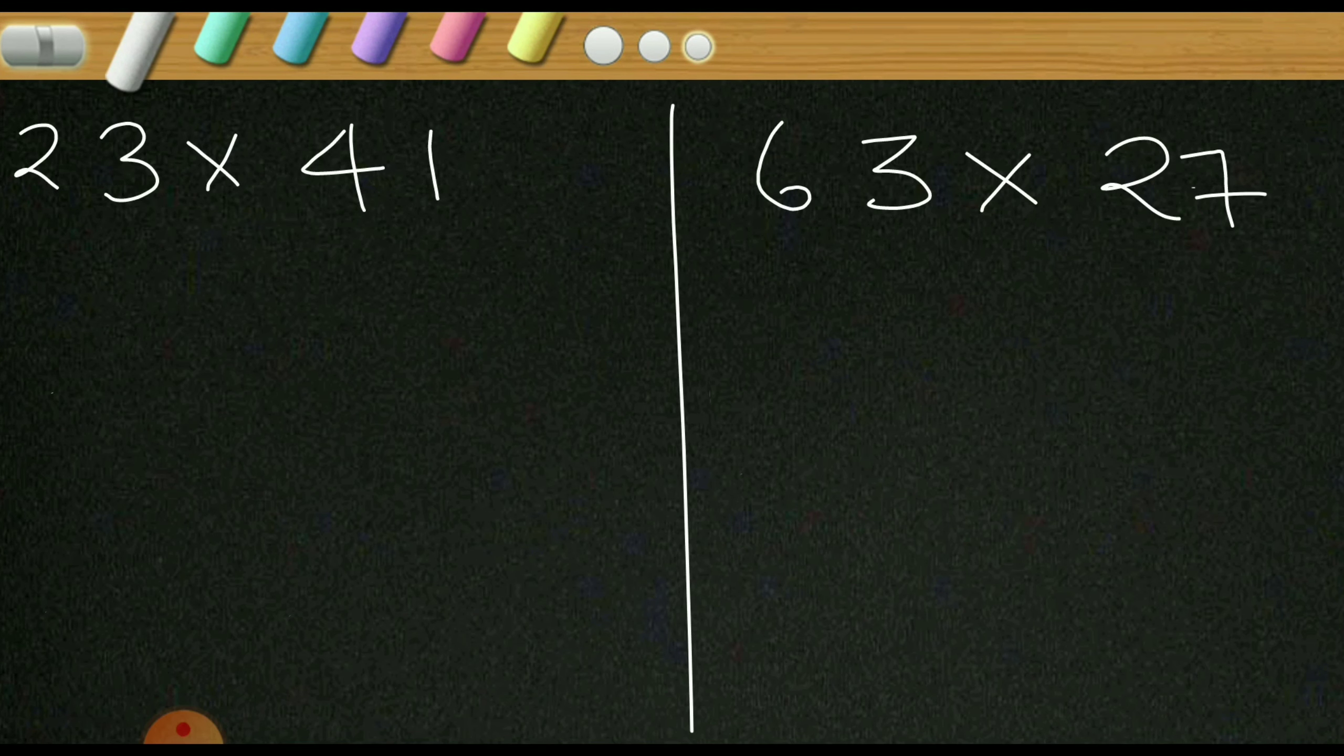So let us begin with 23 into 41. The first step is to multiply the digits in unit place, so that is 3 into 1. What is 3 into 1? 3 into 1 is 3, but you have to write in two digits so it becomes 03.